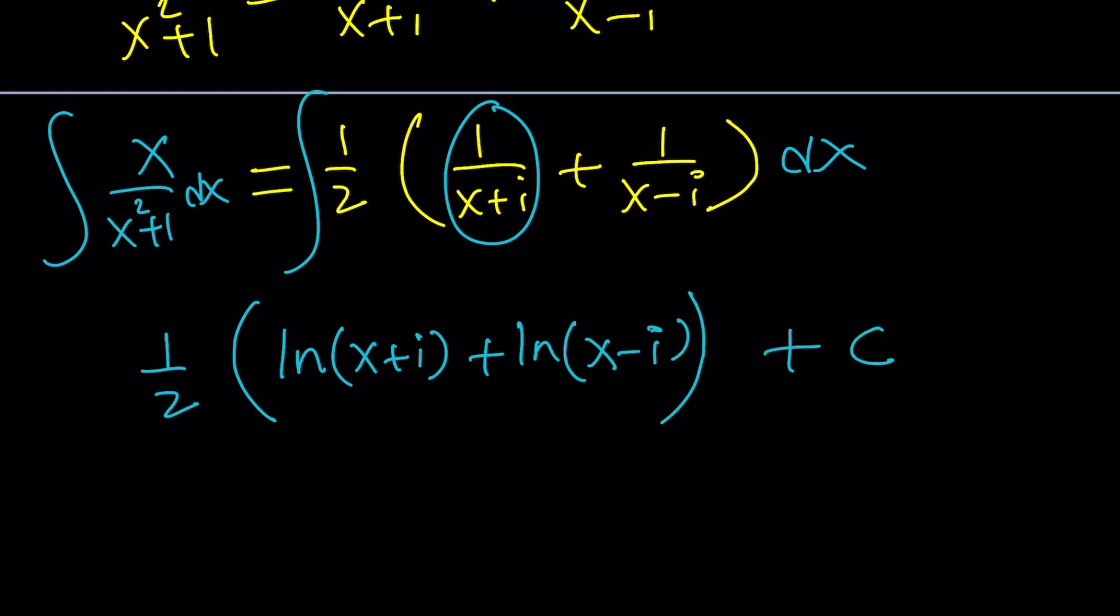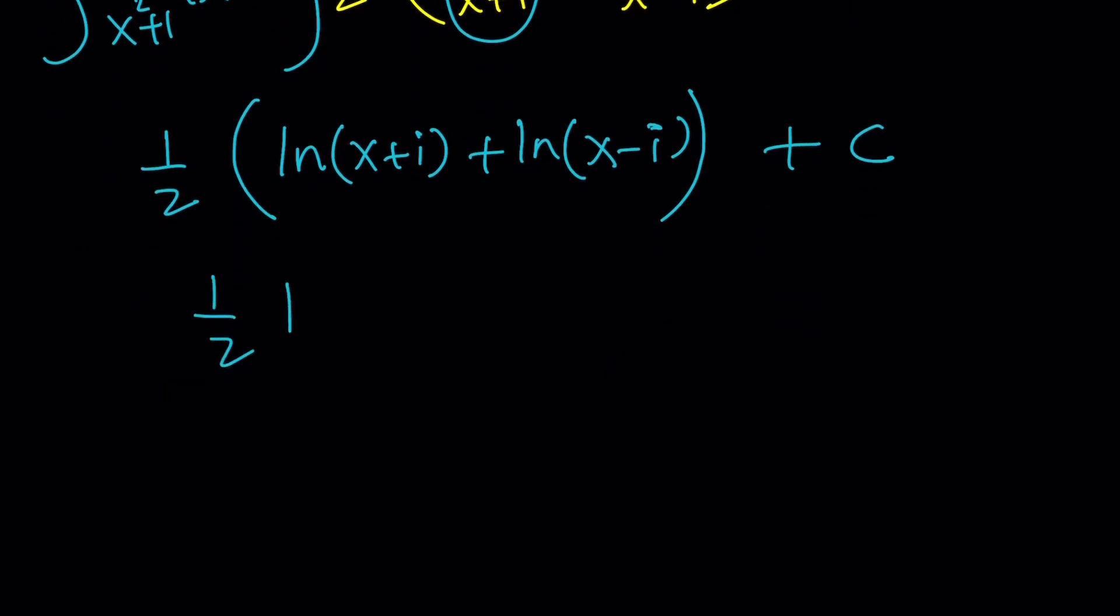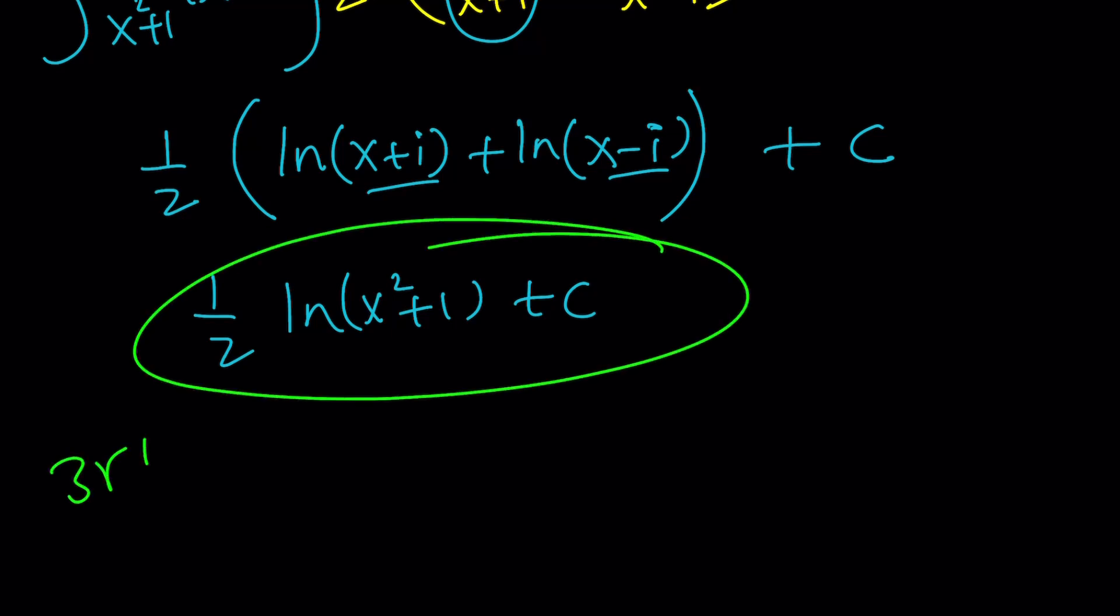But wait a minute, didn't we get something different with the first method? Yes, but using properties of logarithms, you can basically write this as the log of a product, which gives you the exact same thing. And this brings us to the end of the second method only, so don't leave, because we still have to do the third method.